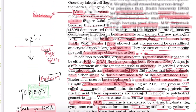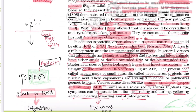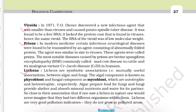We have seen about viruses in previous videos. Now let us start about viroids. Viroids were discovered by T.O. Diener in 1971 — this date is very important. T.O. Diener discovered a new infectious agent that was smaller than viruses.